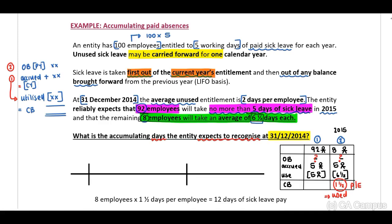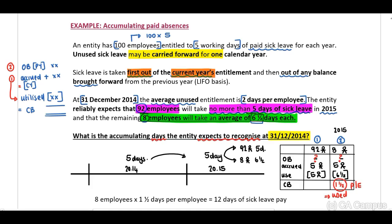You can also use a timeline. If this is our 2014 year, each employee receives five days, and for the following 2015 year they will receive an additional five days. We expect that 92 employees will use five days, and we expect that eight employees will use six and a half days. Therefore, we need to provide for the additional one and a half days used. The solution to this example is 12 days.